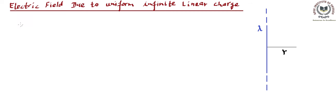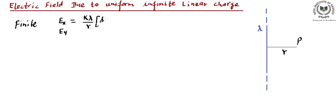If we remember the formula for the finite case of linear charge distribution, we had two components: one was Ex and another was Ey. The Ex component came out to be k lambda upon perpendicular distance r. Here we are using point P, which is at distance r from the wire. For the finite case, this would be k lambda upon r times (sin theta 1 plus sin theta 2).